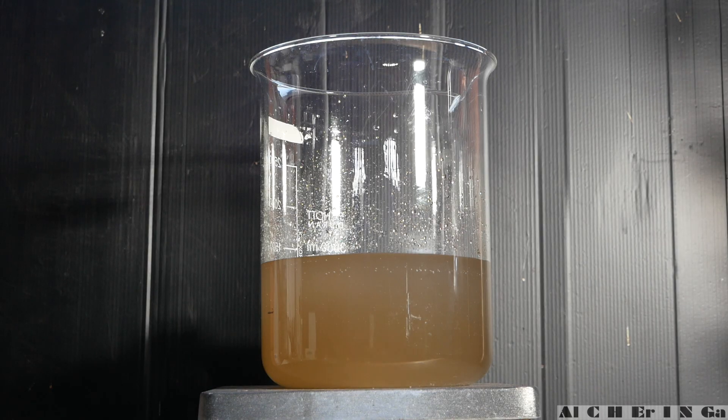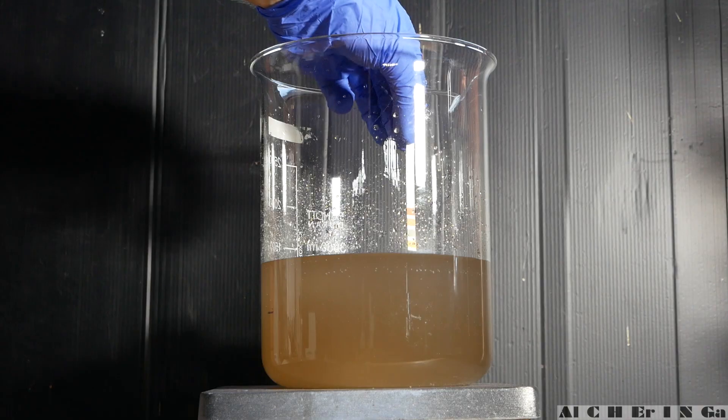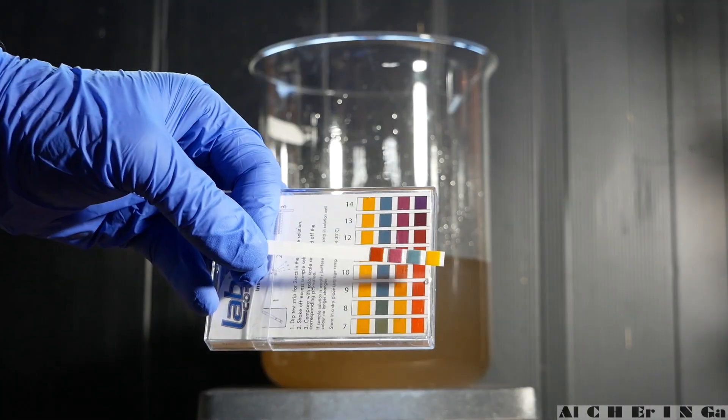Also, the mixture has turned to a more brown color. Now, use pH paper to check that the correct pH of 12 is obtained.